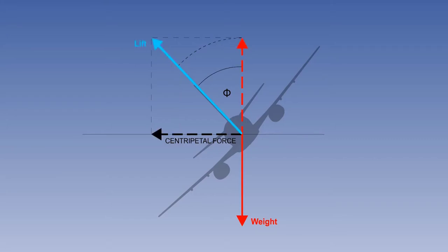As the angle of bank increases, the angle of attack must be increased to achieve a greater weight of total lift, with the vertical component being large enough to balance the weight and maintain level flight, and the horizontal component providing the centripetal force.